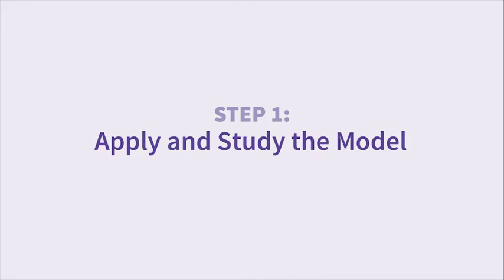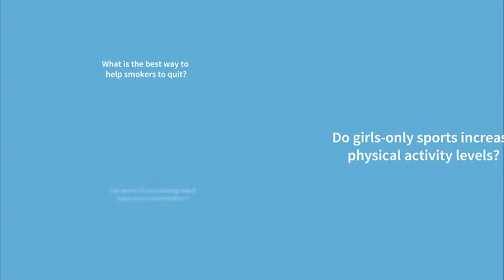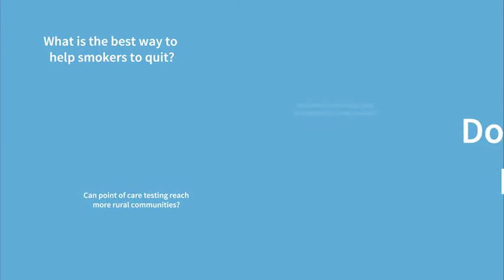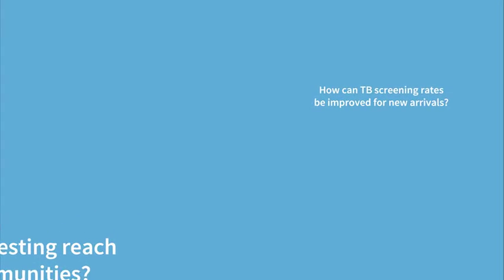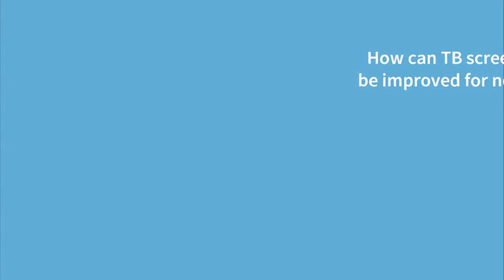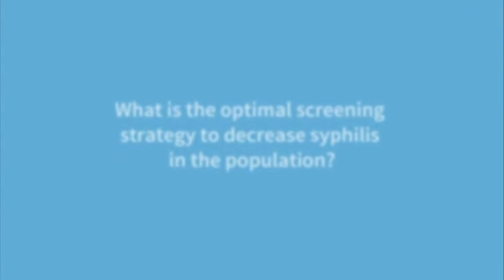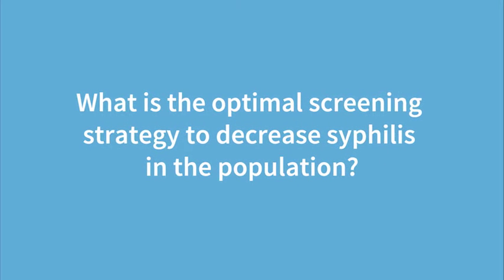Mathematical modeling can be simplified to seven steps. Step 1: First, we need to decide on a research question. The question is very important, as it will determine the type of mathematical model used and the data required. To illustrate the mathematical modeling process, we'll work with a sample research question: What is the optimal screening strategy to decrease syphilis in the population?